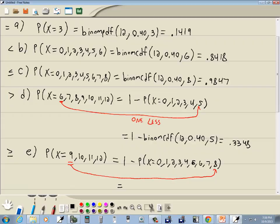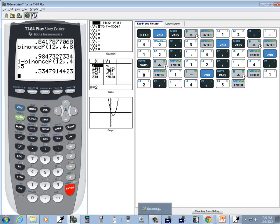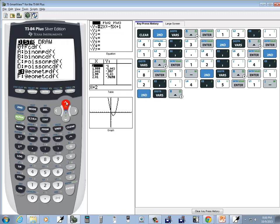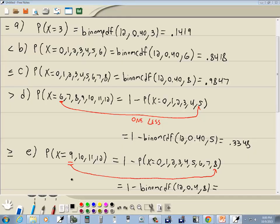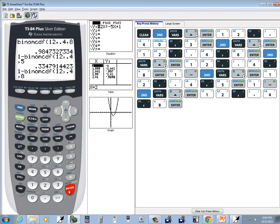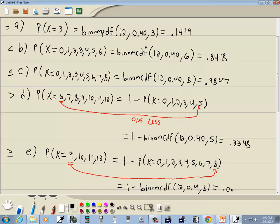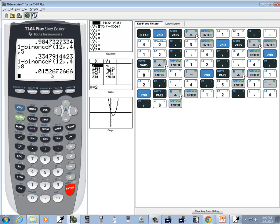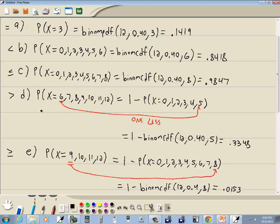Let's see what we get here. So 1 minus binomCDF, n which is 12, and then p which is 0.4, and then our ending value when we go from 0 to number, which would be 8. We'll do 1 minus second vars, which is binomCDF, and 12, comma, 0.4, comma, 8, and then press enter. At four decimal places, we're going to have 0.0153. Since the fifth decimal place is a 6, that means we round up and this goes to 3. And those would be our answers.